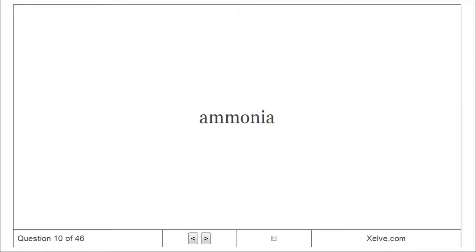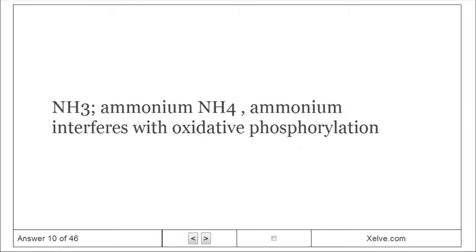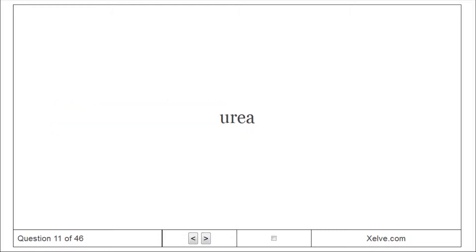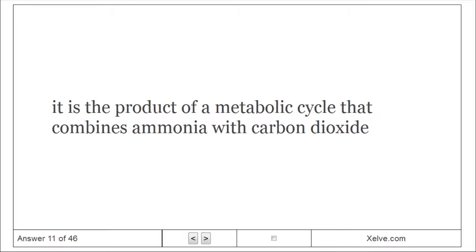Ammonia, NH3. Ammonium, NH4+, interferes with oxidative phosphorylation. Urea: It is the product of a metabolic cycle that combines ammonia with carbon dioxide.